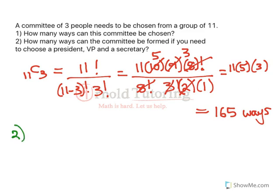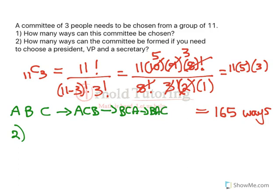Now what about question 2? How many ways can the committee be formed if you need to choose a president, vice president, and secretary? Here's a perfect example. If we choose people A, B, and C, we're now arranging them into different positions, so we have to count A, B, C as separate from A, C, B, and separate from B, C, A, and so on. We're choosing and then arranging, which makes it an NPR situation.